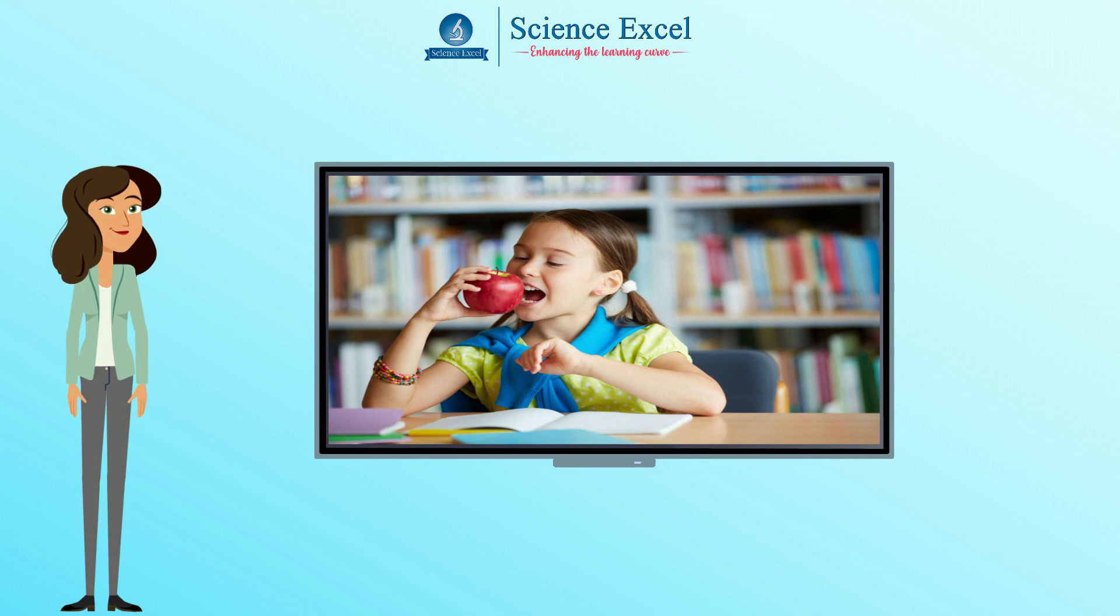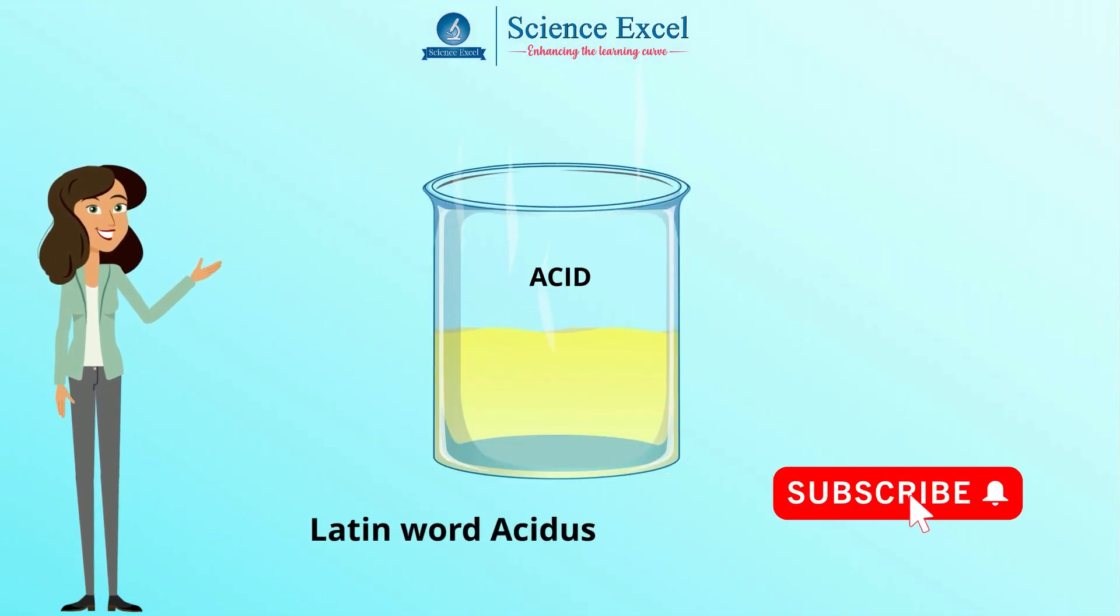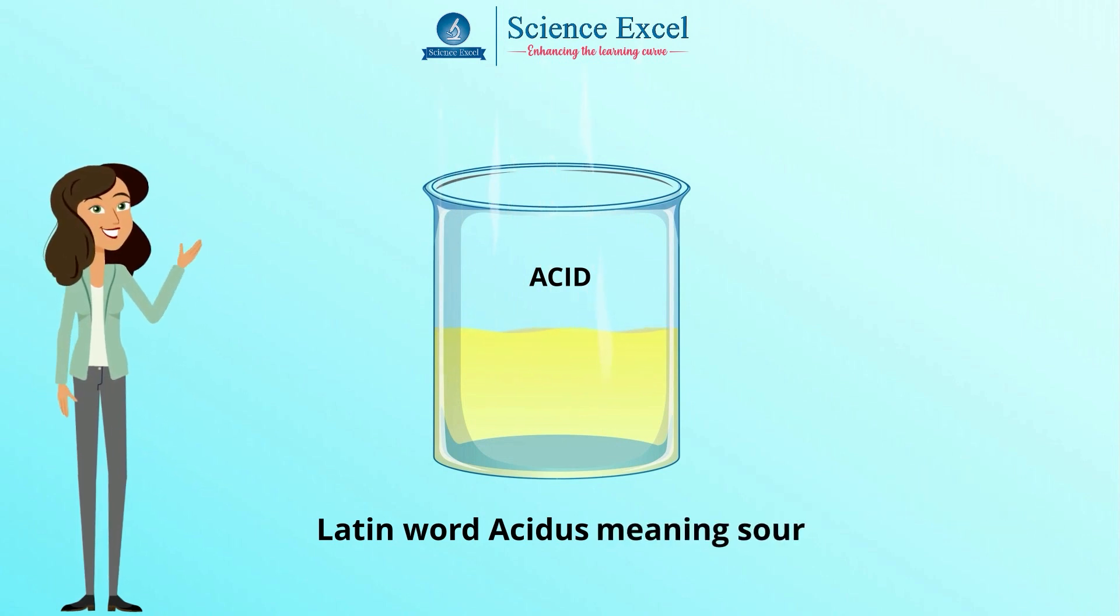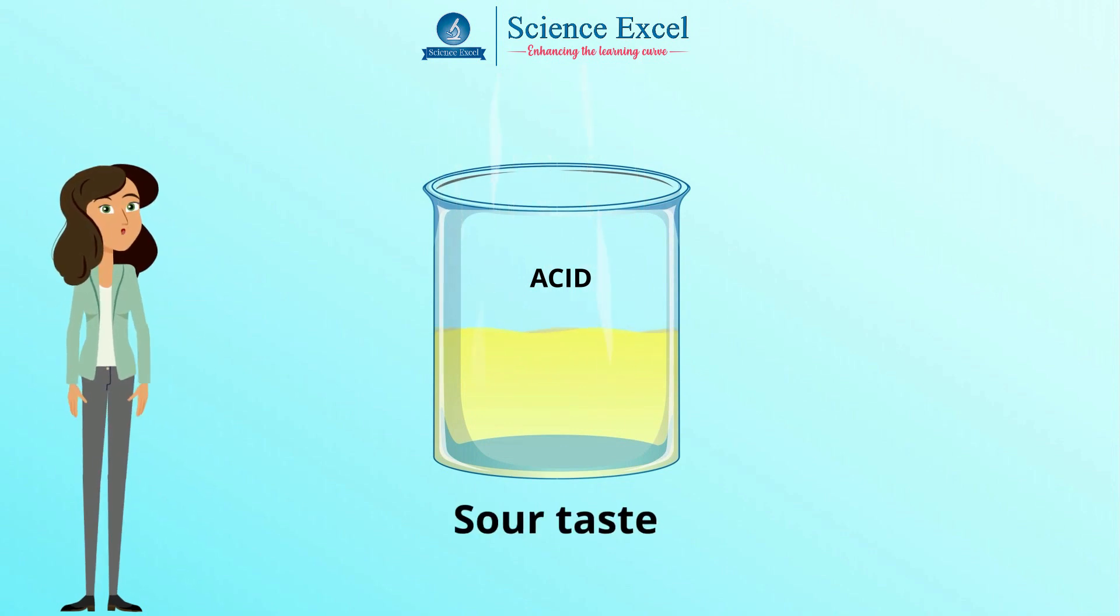Now let us explore what is an acid. The term acid is derived from the Latin word acidus which means sour. The most common characteristic of an acid is its sour taste.